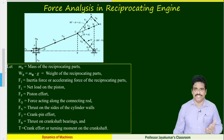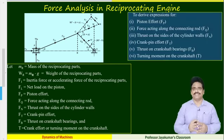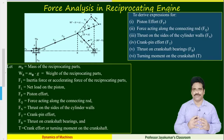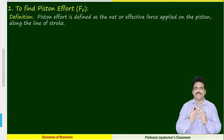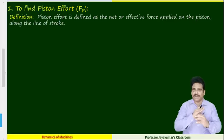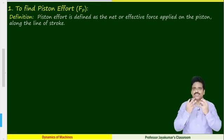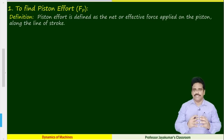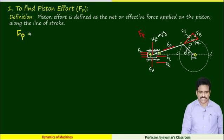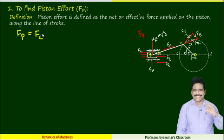These are the notations to be used in this derivation. These are the force components we are going to derive now. What is piston effort? On the piston, there are many forces acting horizontally along the line of stroke. The net force is what we call FP — piston effort. FP equals the net load acting on the piston from gas pressure minus the inertia force of the piston.